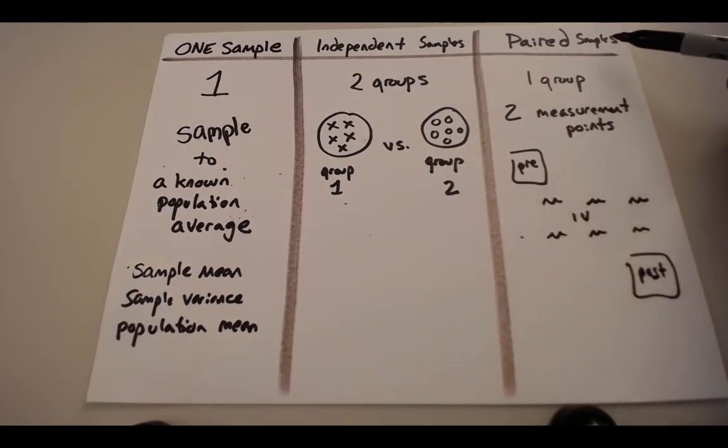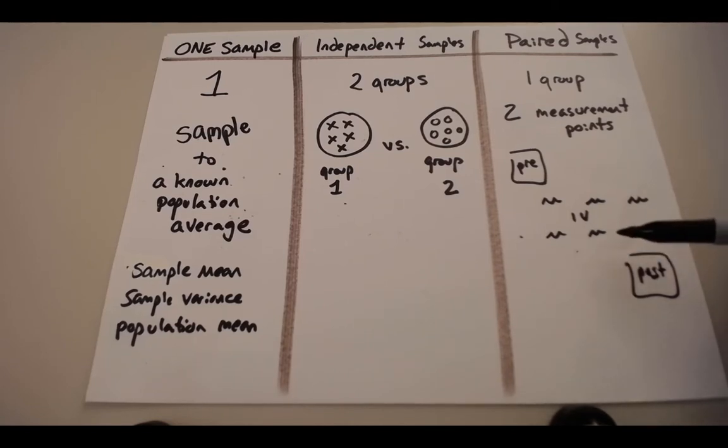In a paired-samples t-test, there's not two groups, but there are two measurement points. We take one group of people, we give them a pre-test on something, then we manipulate the IV however we want to manipulate it, and then we give them a post-test. And what we're looking to see is, did they change over time because of my independent variable manipulation?